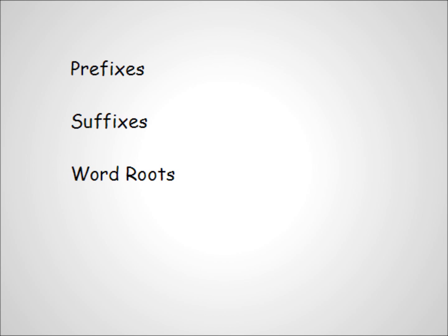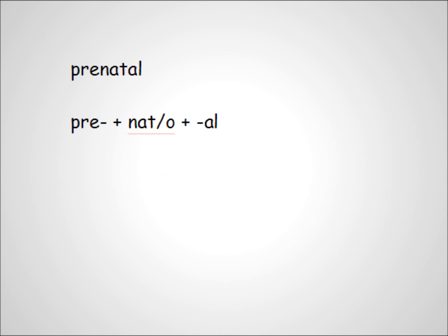To sum up, words in medical terminology are broken up into prefixes, word roots, and suffixes. Some words, like prenatal, have all three parts, but all words in medical terminology have at least one word root and one suffix. Please complete the exercises shown. If you feel confident with the exercises, move on to the next lesson, in which you'll learn how we talk about directions when talking about the human body.